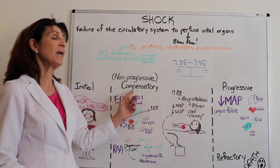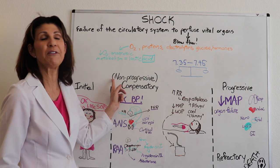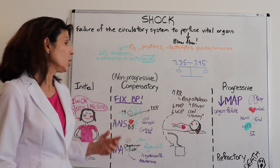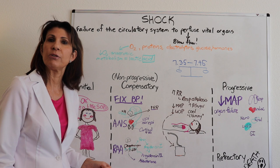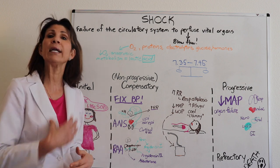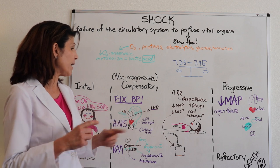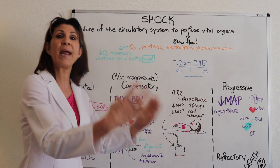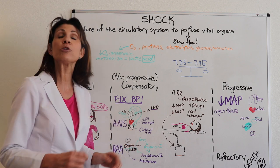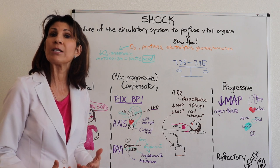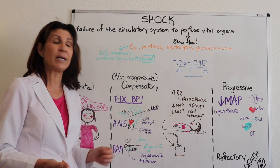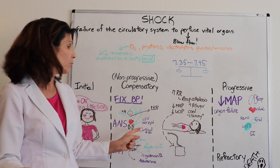As it progresses to the compensatory phase, the two systems that help regulate blood pressure kick in: the autonomic nervous system and the renin-angiotensin-aldosterone system. The autonomic nervous system responds to lower pressure in the carotids and aortic arch, sending a signal to the hypothalamus, which then signals the adrenal medulla — releasing catecholamines, epinephrine and norepinephrine. A signal also goes to the adrenal cortex where cortisol is released. With epi and norepinephrine circulating, we get an increase in heart rate as a compensatory response, an effect on the vasculature to improve blood pressure, and a more elevated blood sugar due to cortisol release.